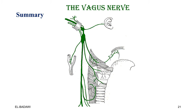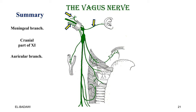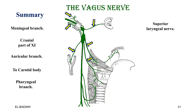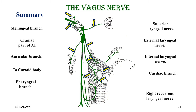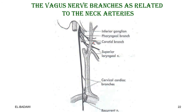A summary diagram shows all vagus branches: the meningeal branch, the cranial part of the accessory joining the vagus, the auricular branch to the external auditory meatus, the branch to the carotid body, the pharyngeal branch to the pharyngeal plexus, the superior laryngeal nerve dividing into external and internal branches, superior and inferior cardiac branches, and the right recurrent laryngeal nerve. Another diagram shows the relation of vagus branches to the great vessels: the pharyngeal branch passing between the internal and external carotid arteries, the superior laryngeal passing deep to both, and the recurrent laryngeal curving around the first part of the subclavian artery.